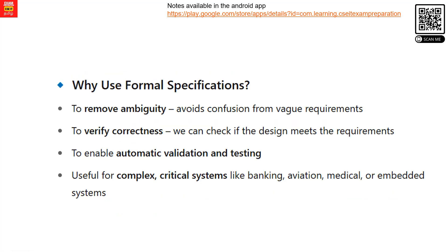Formal specification helps first to avoid confusion from vague requirements. In enterprise-level software, there are many modules, features, and requirements. Ambiguity, validation, and testing are areas where formal specification is especially useful for complex and critical systems.